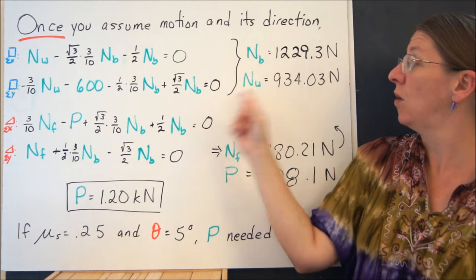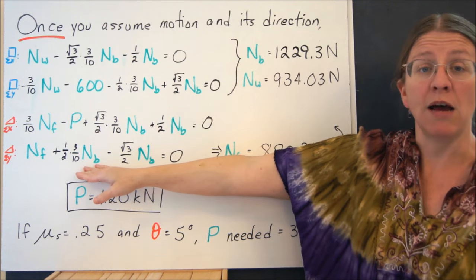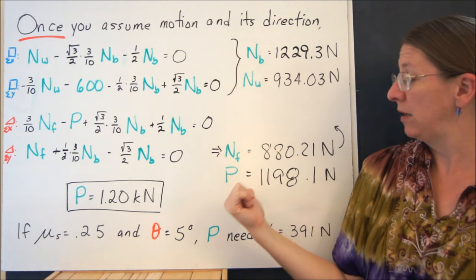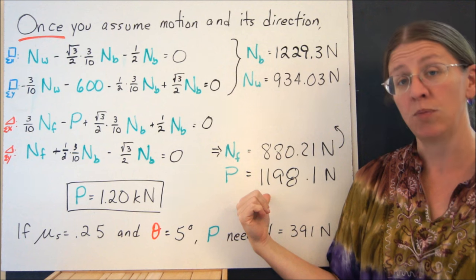That's all you've got. The first two only include NB and NW. This one only includes NF and NB. So once you have NB, you can do NF, and this one only includes P. So now I have a number.